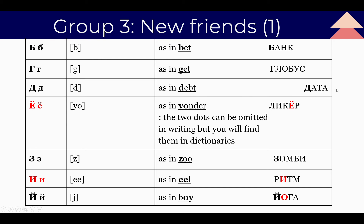The next letter looks like Е but with two dots — it is Ё, sounds like 'yo,' as in 'yonder.' Let's read the word: Ликёр — liqueur. Write the transcription in your notebooks.